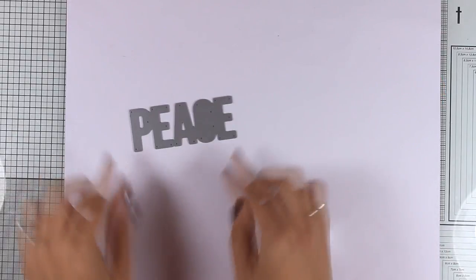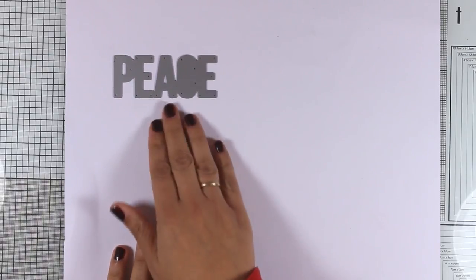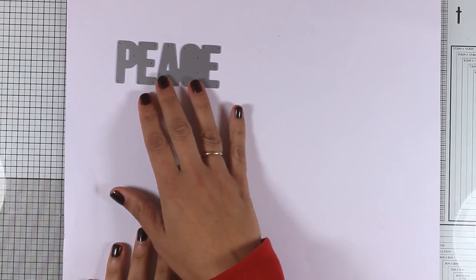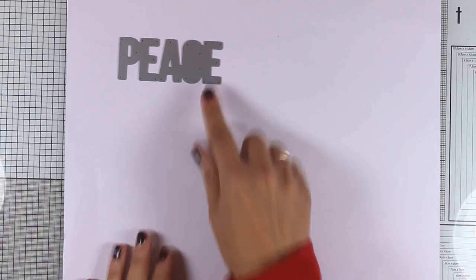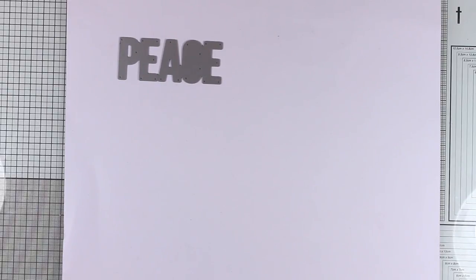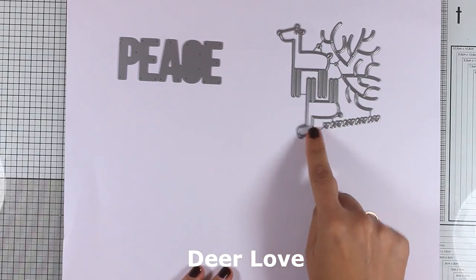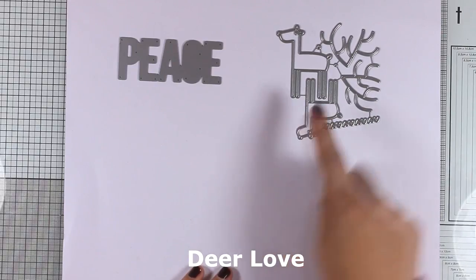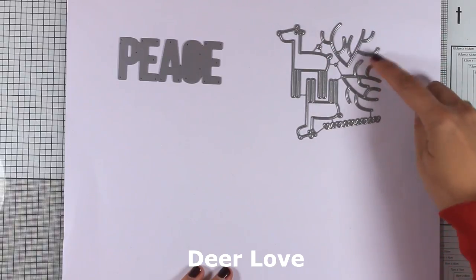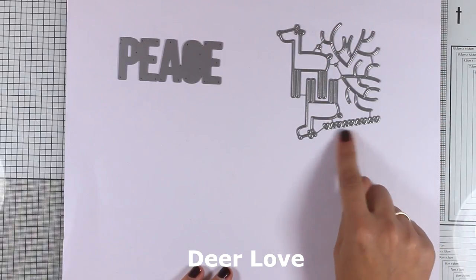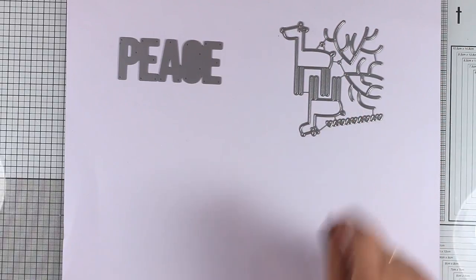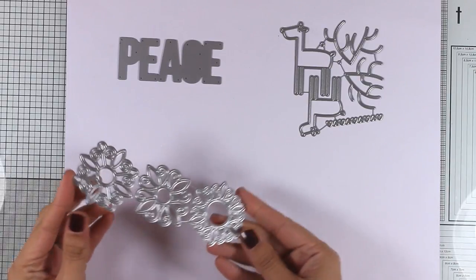Let's take a look at some more dies for this month. This is the word Peace—it's nice, bold, and big, so it's going to make a great focal point on your card. From this release, this is my favorite die set. This is called Dear Love, and you get two little deers in different sizes looking in opposite directions along with tiny little hearts. I think these are adorable.